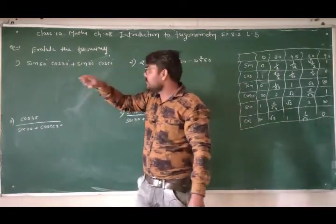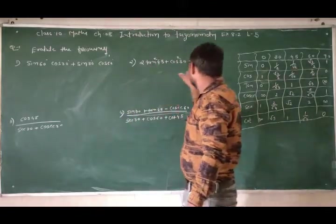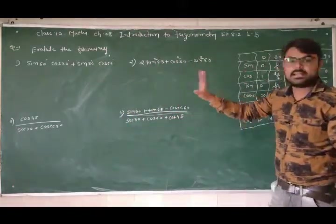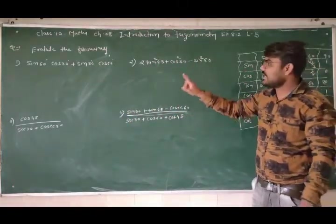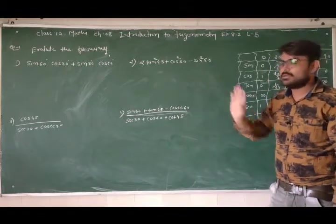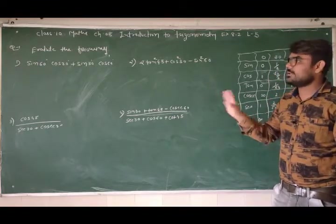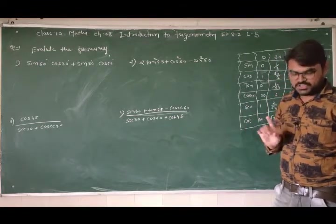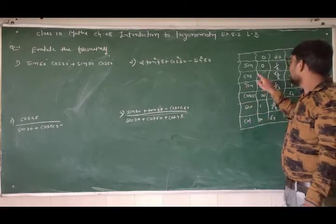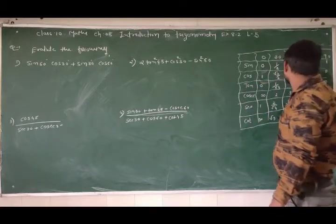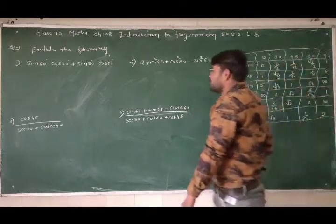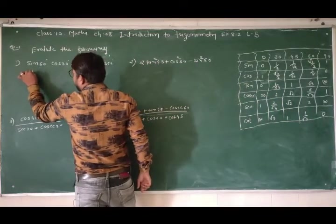तो sin60 की value यहाँ से रखेंगे, फिर cos30 की, फिर sin30, फिर cos60 की — फिर normally solve करके simplify कर लोगे। It's very simple. आप देख सकते हैं: sin60 की value है √3/2 — आप table में देख सकते हैं।